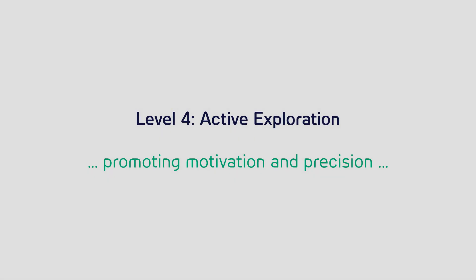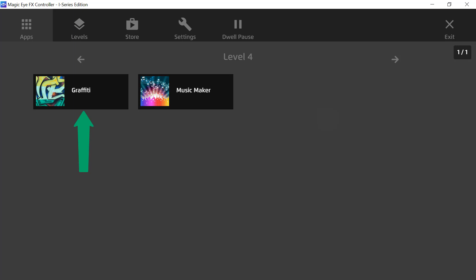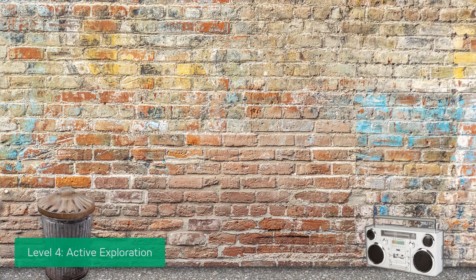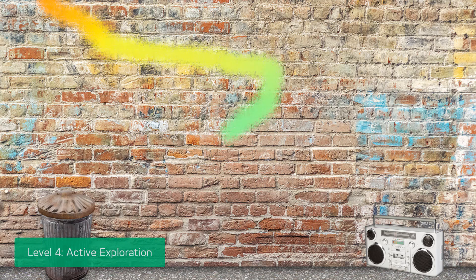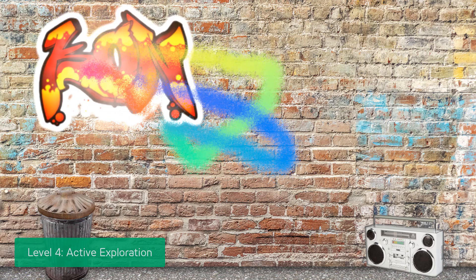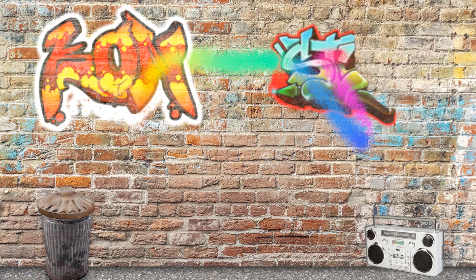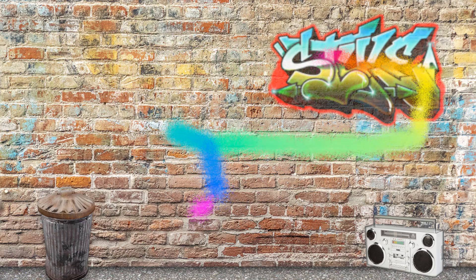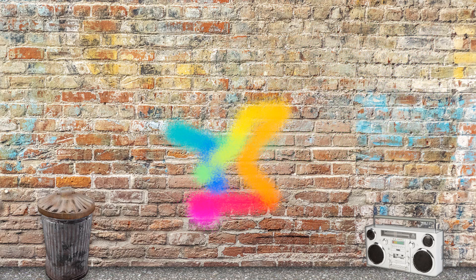Active exploration motivates users to engage with the wider area of the screen using their eyes and to enhance their eye gaze precision. The Graffiti app provides a brick wall for the users to explore and draw on using their eyes. There are two hidden graffiti messages on the wall. While a user is exploring different areas on the wall, it's a nice surprise when he or she discovers the hidden messages. The messages disappear after a few seconds, which peaks the user's curiosity to find them again by practicing more gaze precision on the targeted areas.